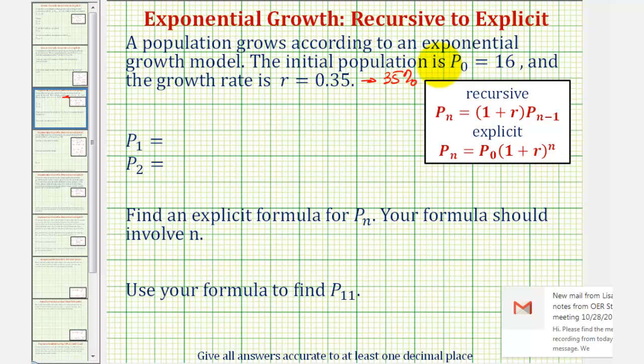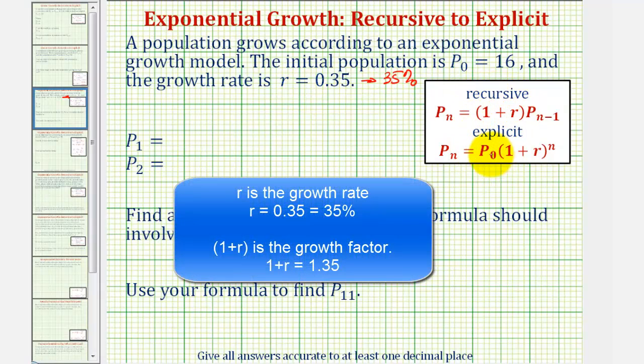Every n unit of time, the population grows by 35%. For the recursive and explicit formulas given here, we need to use the decimal form of the growth rate.